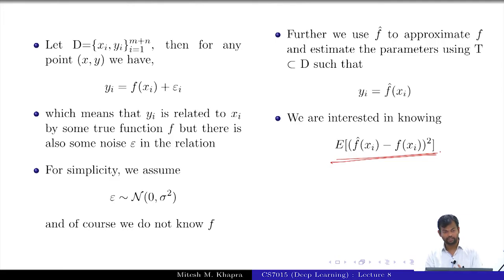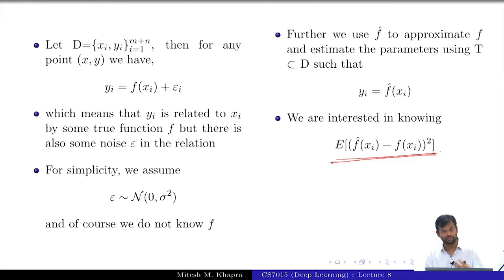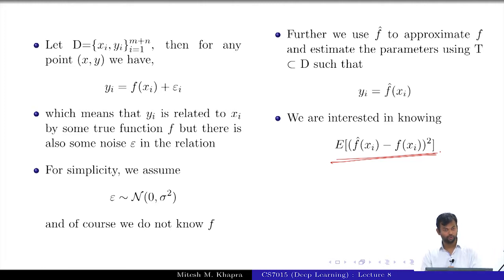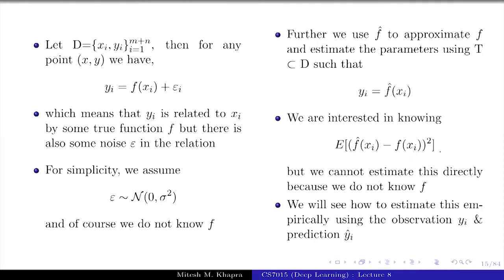We are interested in the expected squared difference between the predictions made by our model and the true value of the output with respect to the true function. We cannot estimate this quantity because we do not know what f(x_i) is. We will see how to estimate this empirically.